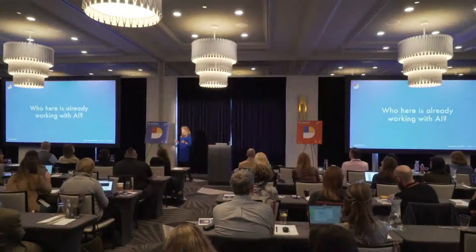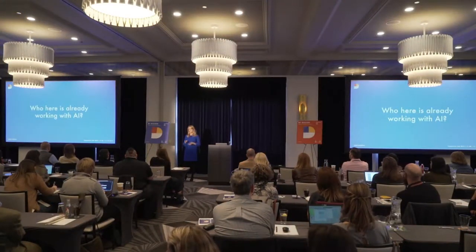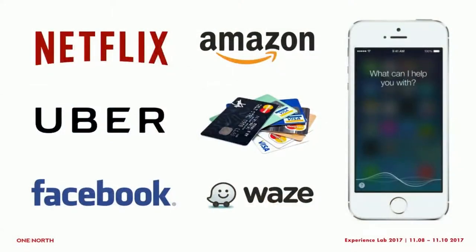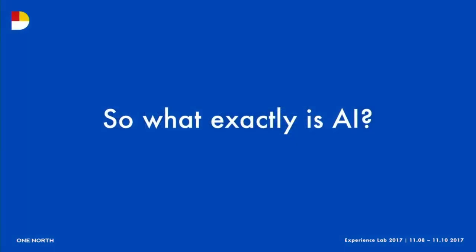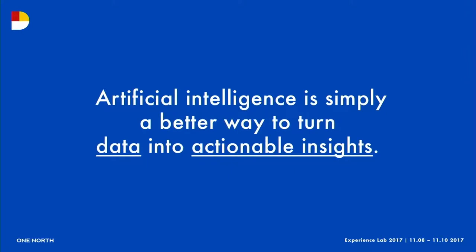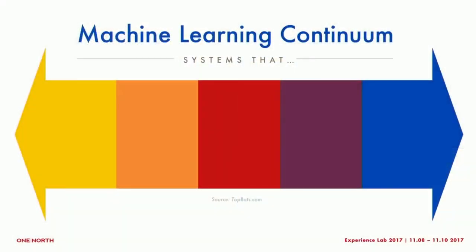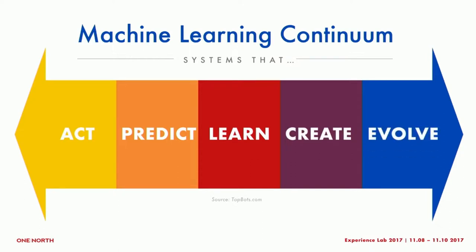There's a lot of hype around AI, but there's tremendous value in learning how it can help your marketing efforts. Everybody in this room already works with AI on a daily basis — things like Uber's time-to-destination, Facebook's photo recognition software, credit card fraud detection, and virtual assistants like Siri. A good simple definition: artificial intelligence is simply a better way to turn data into actionable insights. A useful mental model is the machine learning continuum, which I'll use to break down the next few minutes.